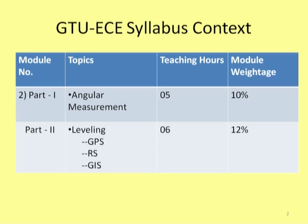This screenshot carries module two of the syllabus, the G2 syllabus of the subject 'Elements of Civil Engineering.' GIS is part of this module. The second level carries certain advanced surveying tools — GPS, remote sensing, and GIS — under which we are studying. The teaching hours are six and the module weight given to this is 12%.